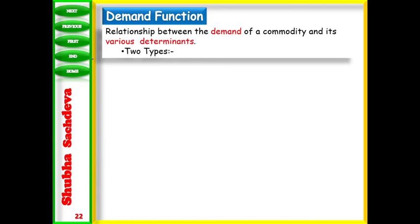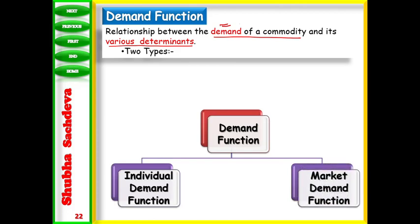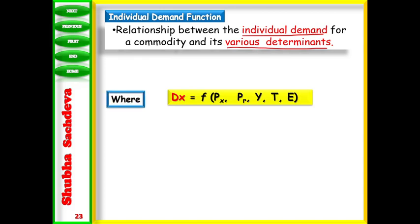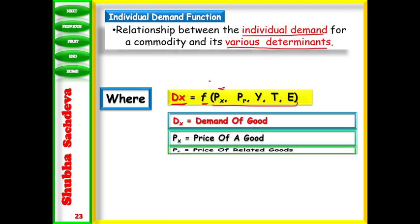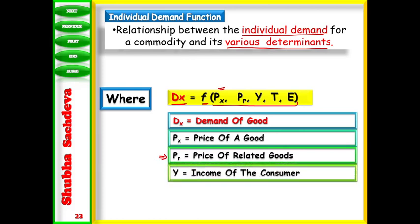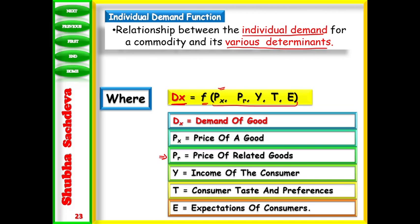Demand function: What is demand function? Demand function is the relationship between the demand of a commodity and its various determinants. Determinants means those things that affect demand. There are two kinds: individual and market. Individual demand function - where Dx is the demand of the good, Px is the price of the good, PR is the price of related goods (either substitute or complementary), Y is the income of the consumer, T is taste and preferences, E is expectations.